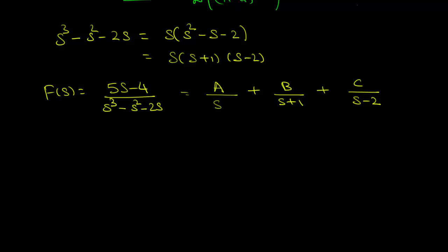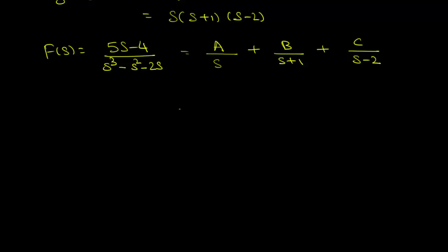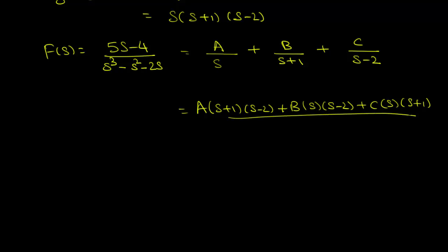By taking the LCM of the three fractions, we get A times (s plus 1) times (s minus 2) plus B times s times (s minus 2) plus C times s times (s plus 1), all divided by s times (s plus 1) times (s minus 2), which equals s cubed minus s squared minus 2s.